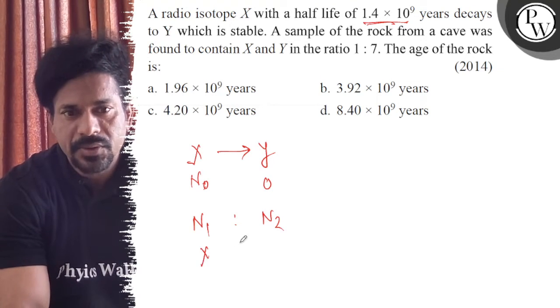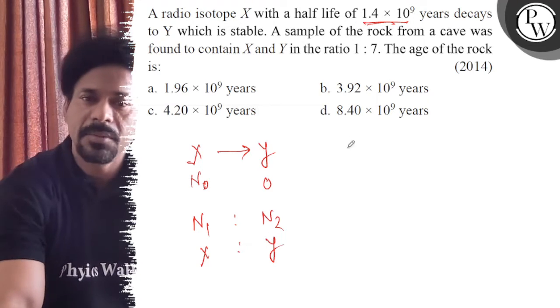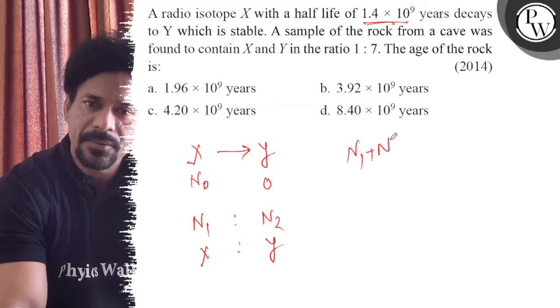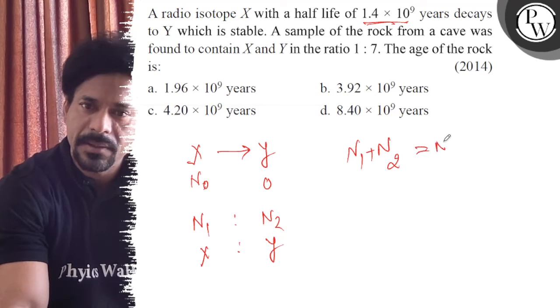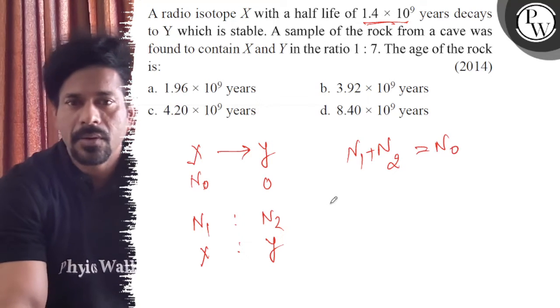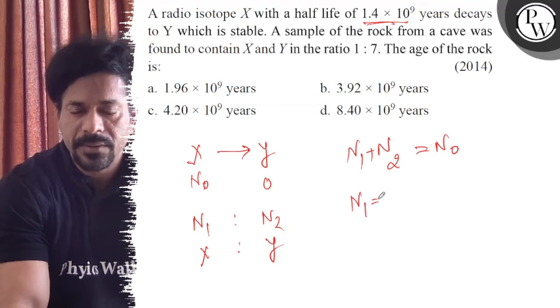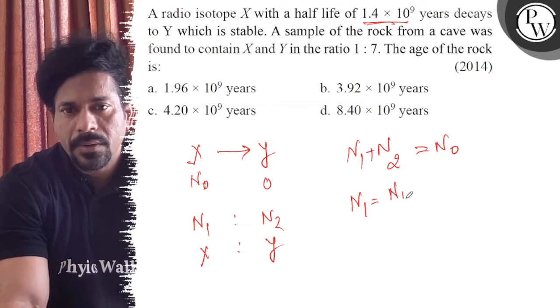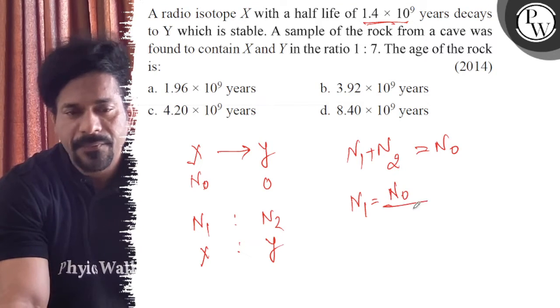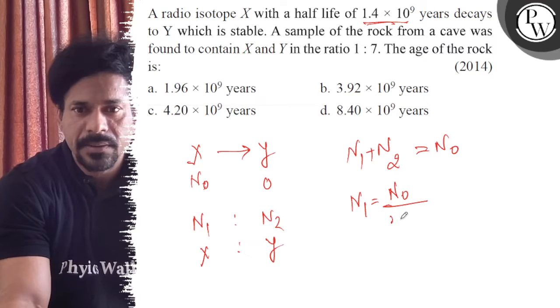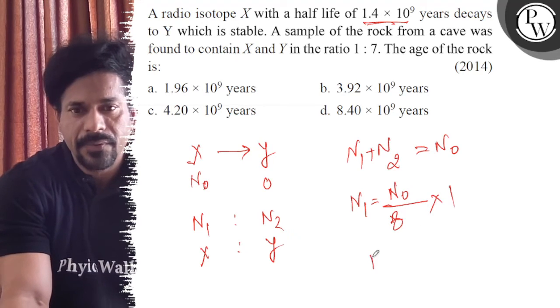The ratio of X to Y - N1 plus N2 equals N0. So N1 equals N0 times the ratio. From the 1:7 ratio, the total is 1+7=8, so N1 equals N0/8.